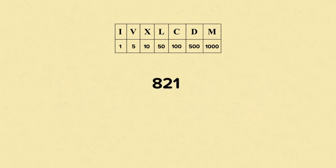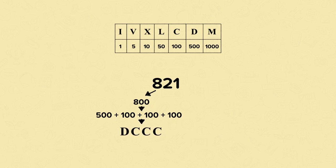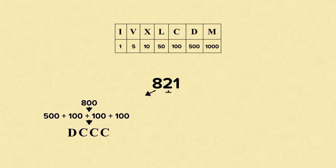Now let's start with a number and see if we can turn it into Roman numerals. To help us, we're going to partition the number. Let's start by working out what 800 would be in Roman numerals. To make 800, we do 500 plus 3 lots of 100, so that would be D, C, C, C. So 800 is just DCCC. Now let's focus on the tens. To make 20 using Roman numerals: 20 is made up of 10 and 10, that's X and X.